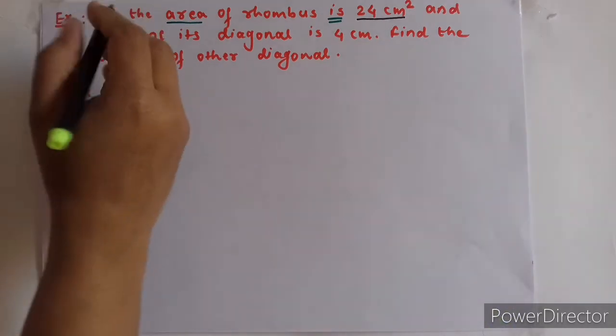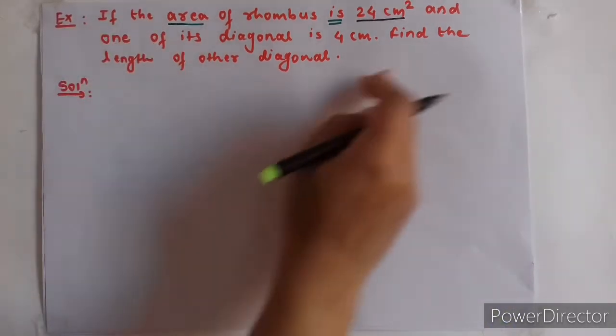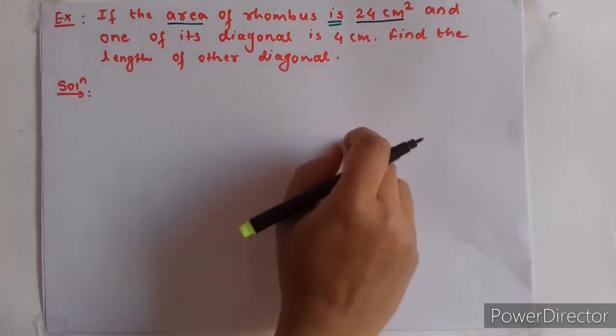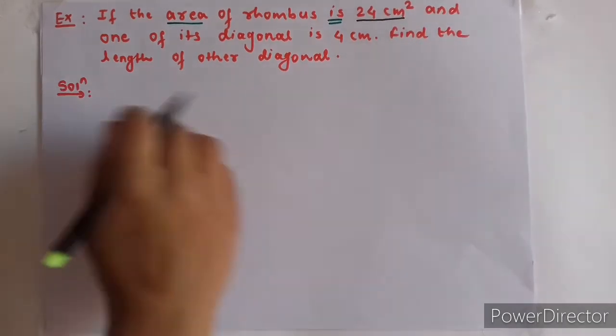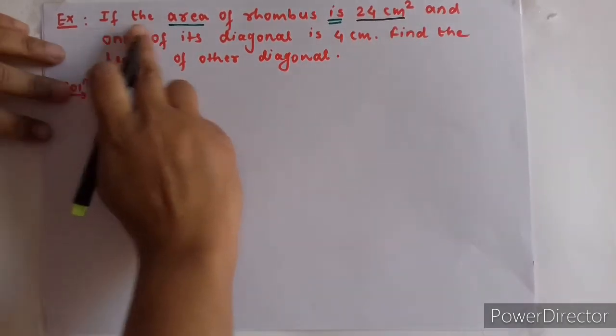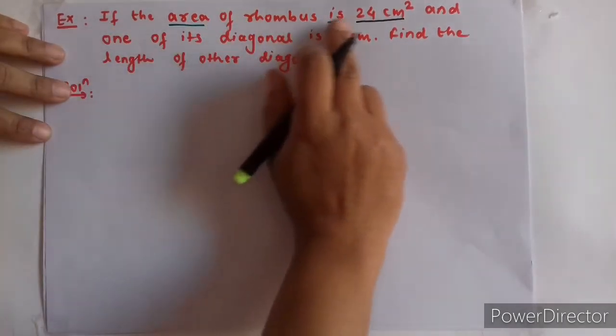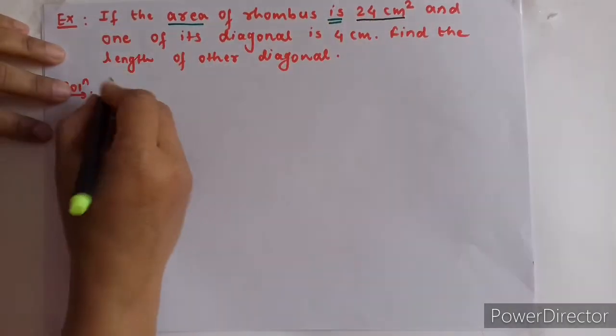Now let us look at the solution. We do not need to remove the diagram of the rhombus. This is the area of the rhombus. Let us write what is given.